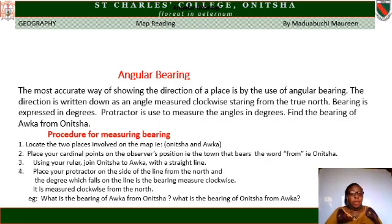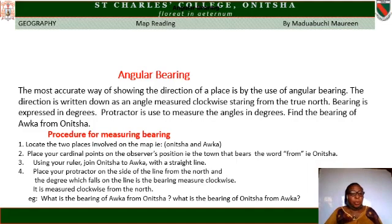Angular bearing. The most accurate way of showing the direction of a place is by the use of angular bearing. The direction of a place is written down as an angle measured clockwise from the true north. Bearing is expressed in degrees, and a protractor is used to measure the angles in degrees.